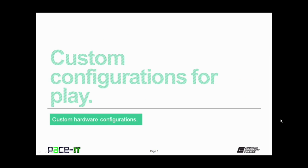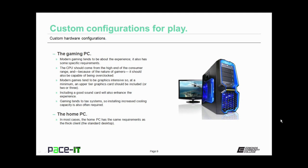Now let's move on to custom configurations for play. We start with the gaming PC. Modern gaming tends to be about the experience and has some specific requirements. The CPU in a gaming machine should come from the high end of the consumer market, and because of the nature of gamers, it should also be capable of being overclocked. Modern games tend to be very graphics intensive, so at the minimum an upper tier graphics card should be included — or two, or three.